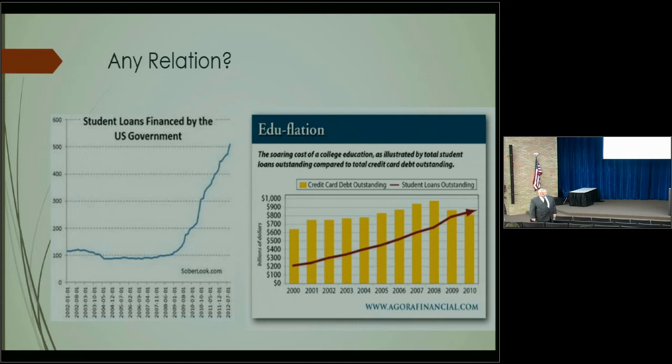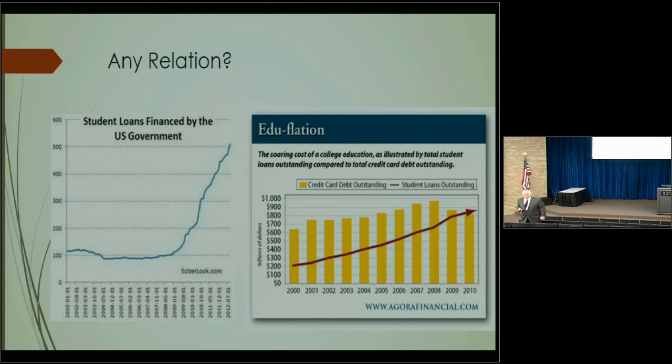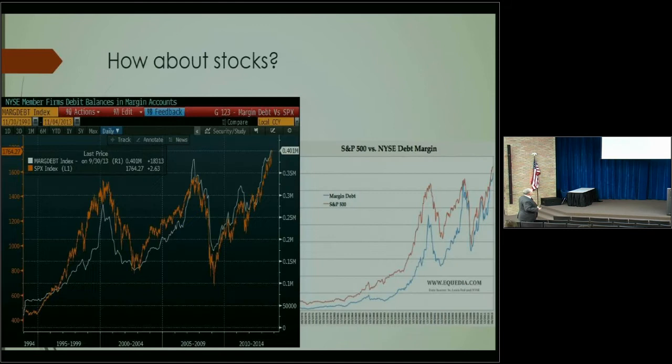I tell my students: you can get any edition of the textbook you want — they're all the same, they just change the chapters around. You don't need to pay 300 dollars for a book when you can get it on Amazon for 10.95. What's pushing the stock market on? It certainly isn't the bottom of the economy, because the bottom of the economy is stalled.